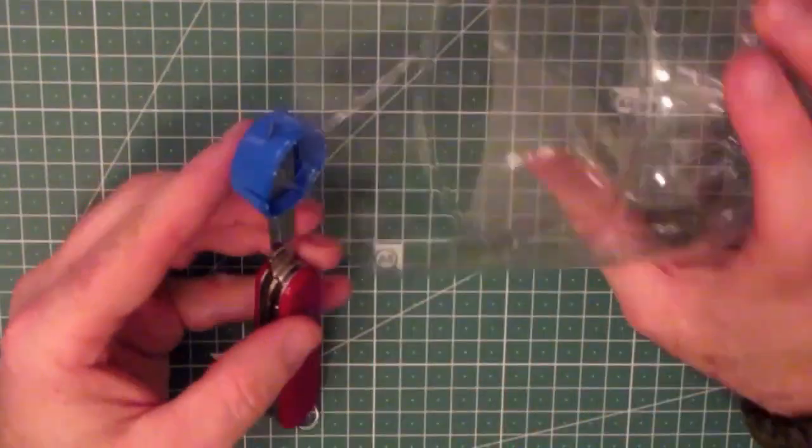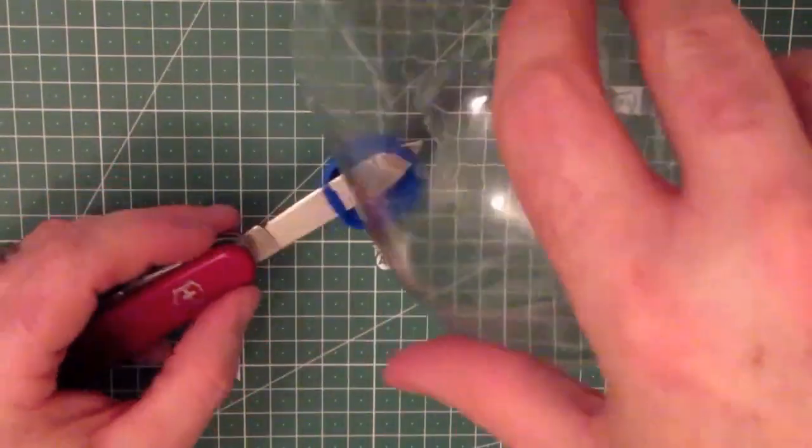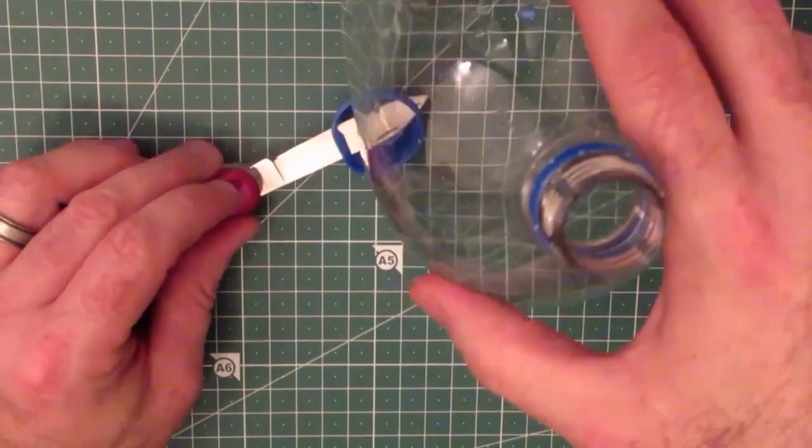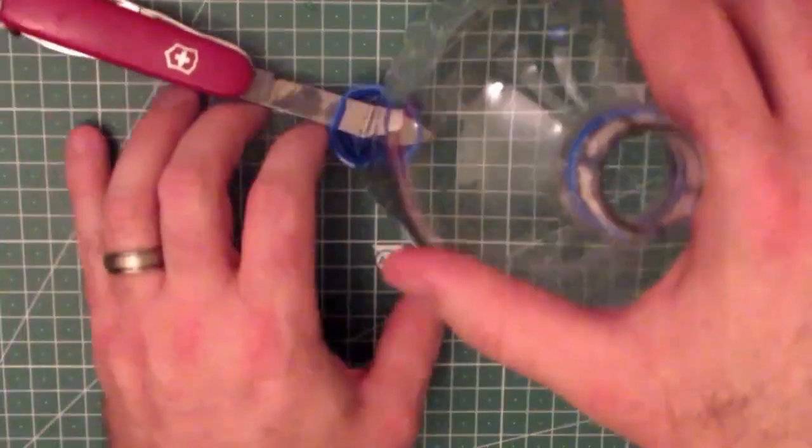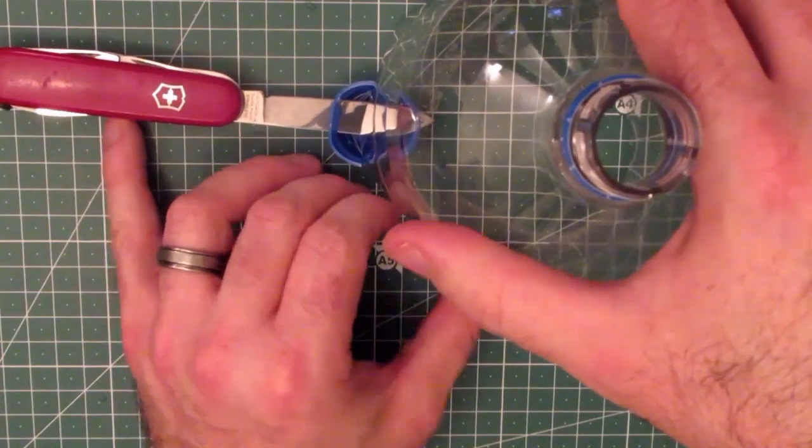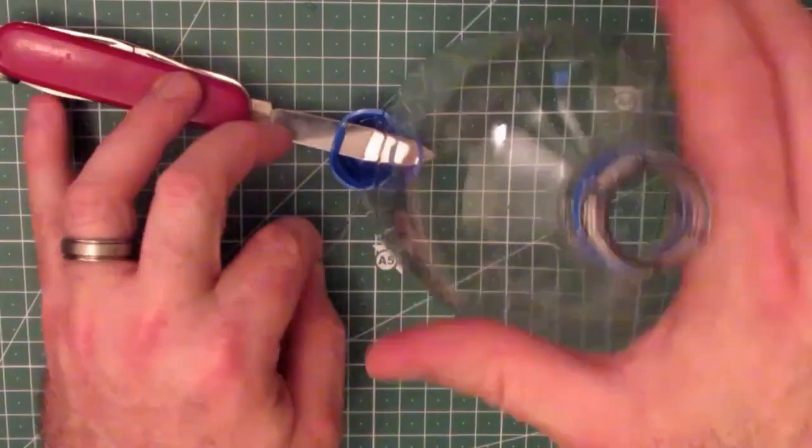All right, so there we are. We have the bottle going through the two vertical cuts with the little starty bit that we had underneath the blade, if you can see that there.